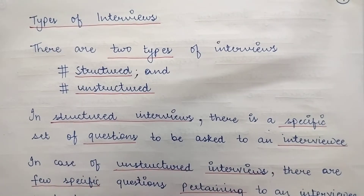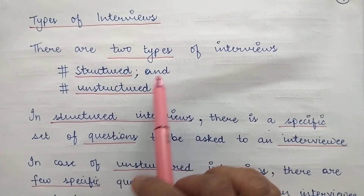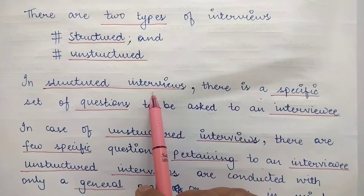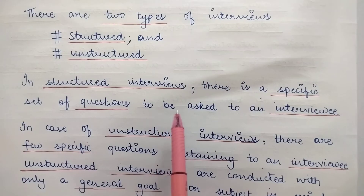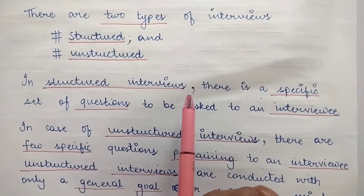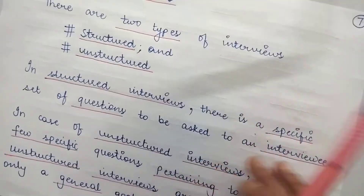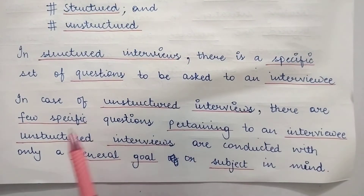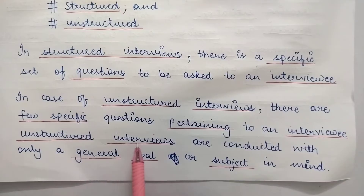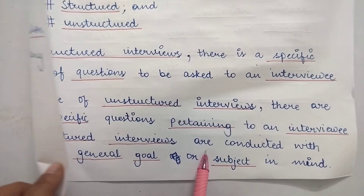Now let us look at the various different types of interviews that can be conducted. In two broad categories, you can divide interviews: structured and unstructured. In structured interviews, there is a specific set of questions that are already framed — you cannot deviate, and only those specific questions will be asked. In unstructured interviews, as the name suggests, there is no specific structure or format. You will have just a few specific questions, and other than that, only general questions, because unstructured interviews are conducted with only a general goal or subject in mind.